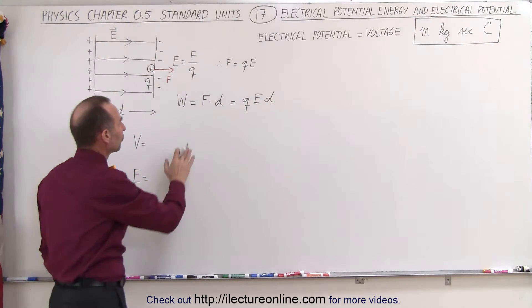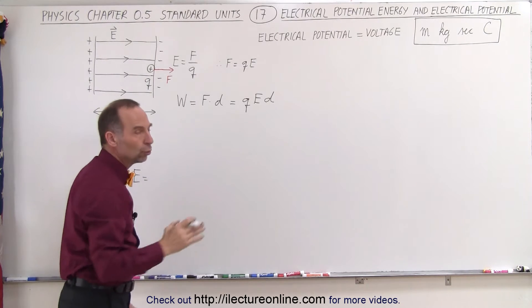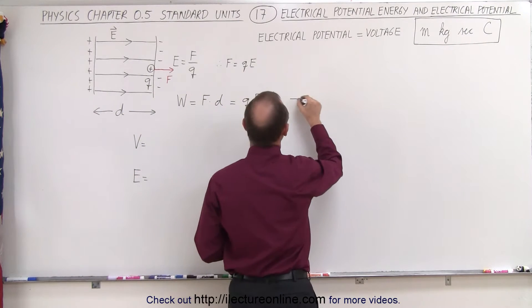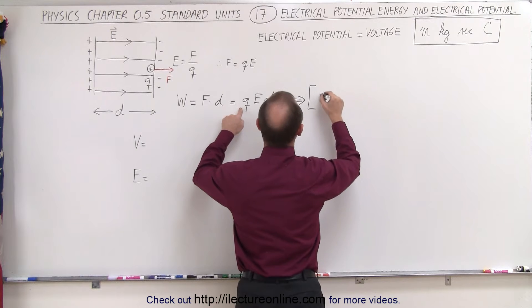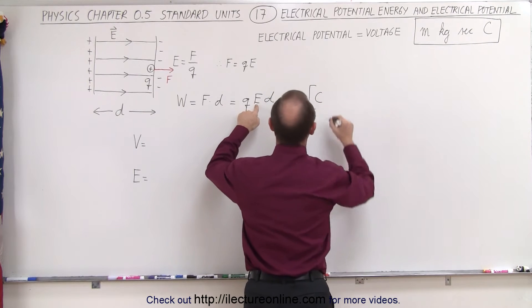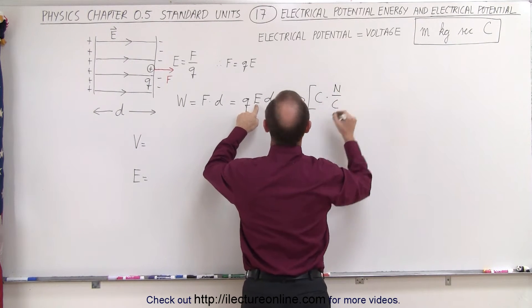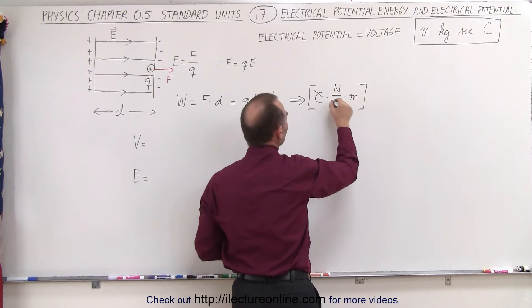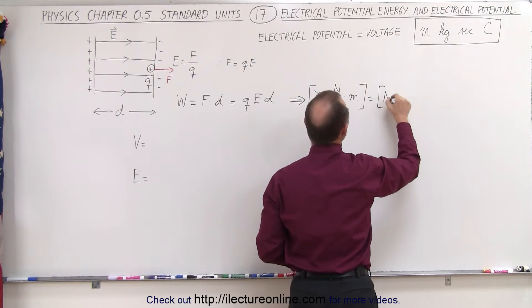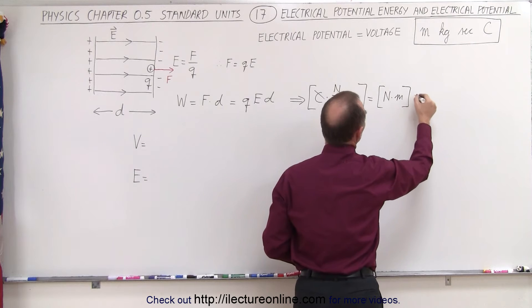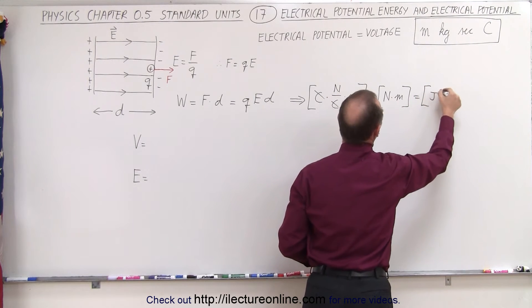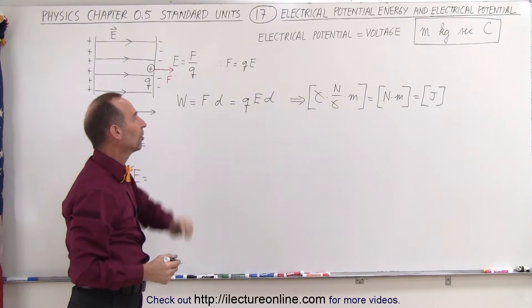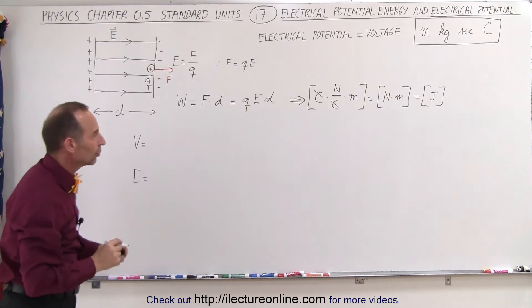Now we know that the units for work are the same as the units for energy, which is joules. Let's see if these add up to joules when we convert to units. The units of charge are coulombs, the units of the electric field are newtons per coulomb, and the units for distance are meters. Notice that the coulombs cancel out. We end up with newtons times meters, and of course that's equal to the definition of joules, which is the unit of energy. So indeed, this is equal to energy or work done — force times distance, Q·E·D — so the units do match.